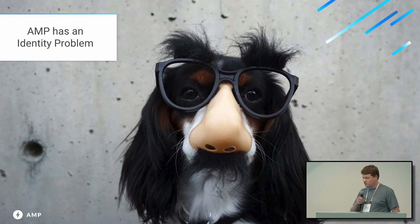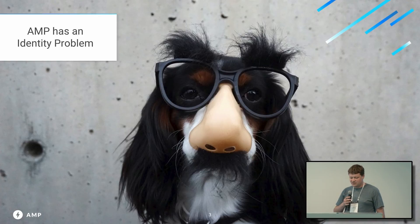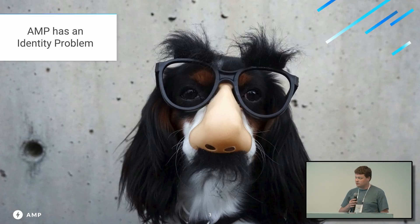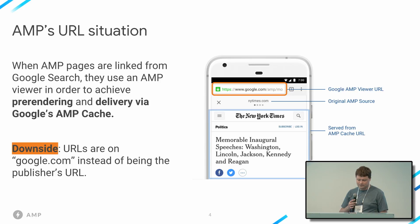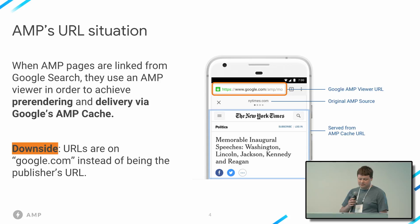While it may have slipped your attention, AMP pages on an AMP cache have a bit of an identity problem. The AMP cache delivers fantastic performance for AMP pages for all of our customers. But to do so, it has to deliver the document using the AMP cache's own identity, not the original author's intended identity — in this case, google.com. So while AMP pages are linked from AMP search, they use a viewer in order to achieve privacy-preserving pre-rendering and delivery via AMP cache. The downside is the displayed URL is Google instead of New York Times.